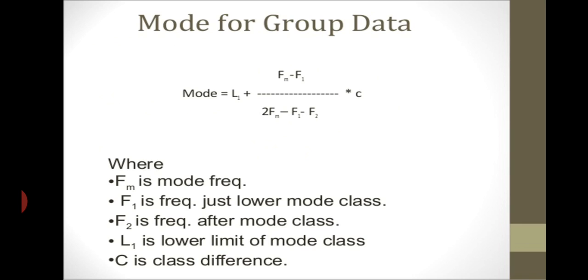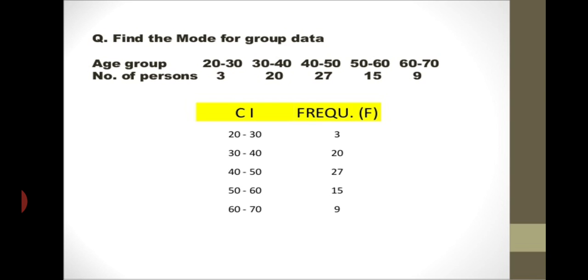Now let's see how to calculate mode for ungrouped data using the formula: Mode = L1 + [(fm − f1) / (2fm − f1 − f2)] × class interval. Here fm is the modal frequency, f1 is the frequency just below the modal class, f2 is the frequency after the modal class, L1 is the lower limit of the modal class, and c is the class difference.